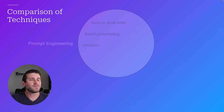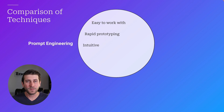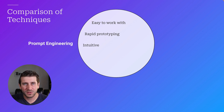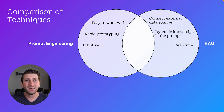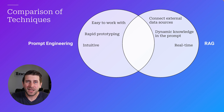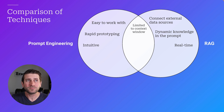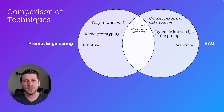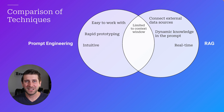So let's review. We have these three techniques: prompt engineering, which is awesome because it's easy to work with, you can do rapid prototyping, and it's very intuitive to just write instructions and get what you want back. RAG is really powerful because it allows you to connect external data sources, you can have dynamic knowledge in the prompt that grounds it to your facts, and it's real-time — as you add more information to your database, it can be referenced by the large language model. Both prompt engineering and RAG deal with the prompt, so they're limited to your context window — you can't insert your whole knowledge base; you have to be really selective and get the right information.